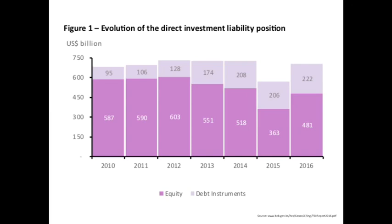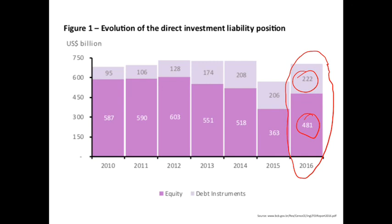The third part is based on the Central Bank of Brazil report. In 2016, the liability position was around 700 billion dollars, with a large part as equity and another part as debt instruments — meaning money transferred as inter-company loans rather than direct capitalization of subsidiaries. The stock of foreign direct investment in Brazil has been very stable, with the exception of 2015, which was impacted by the recession.